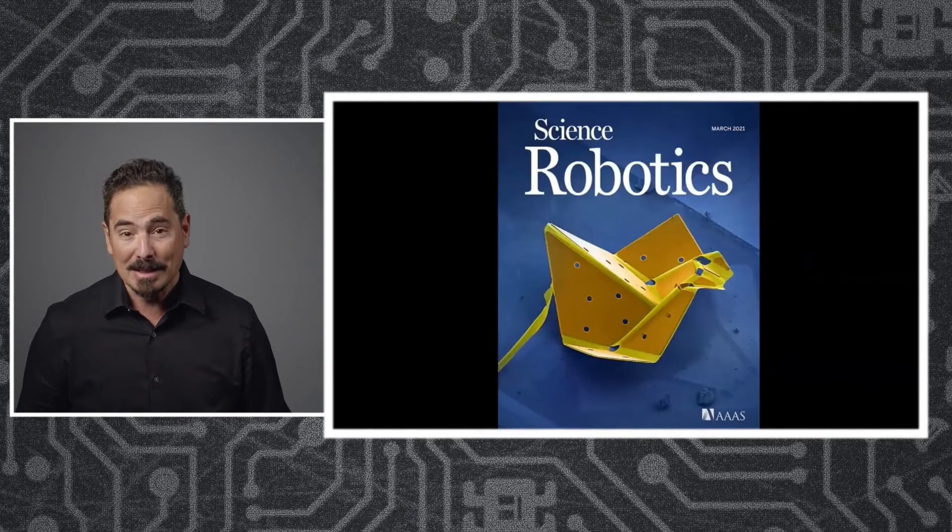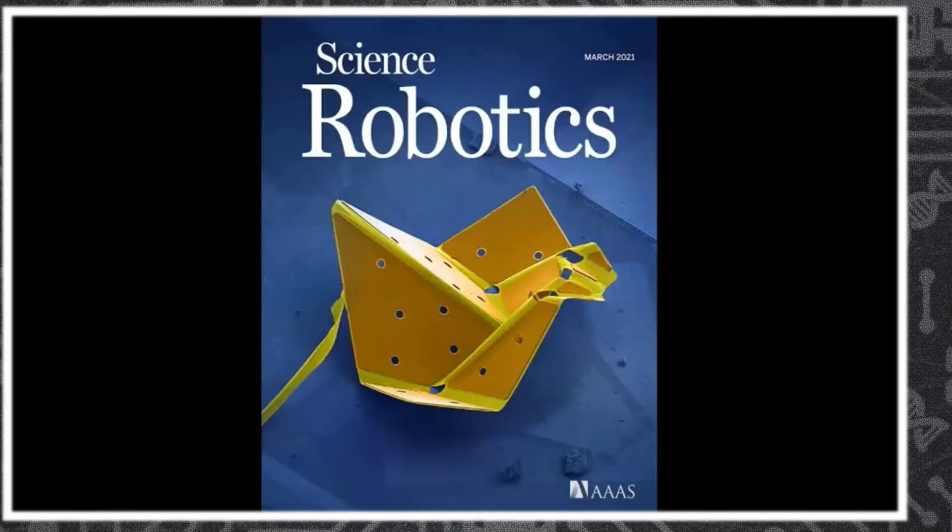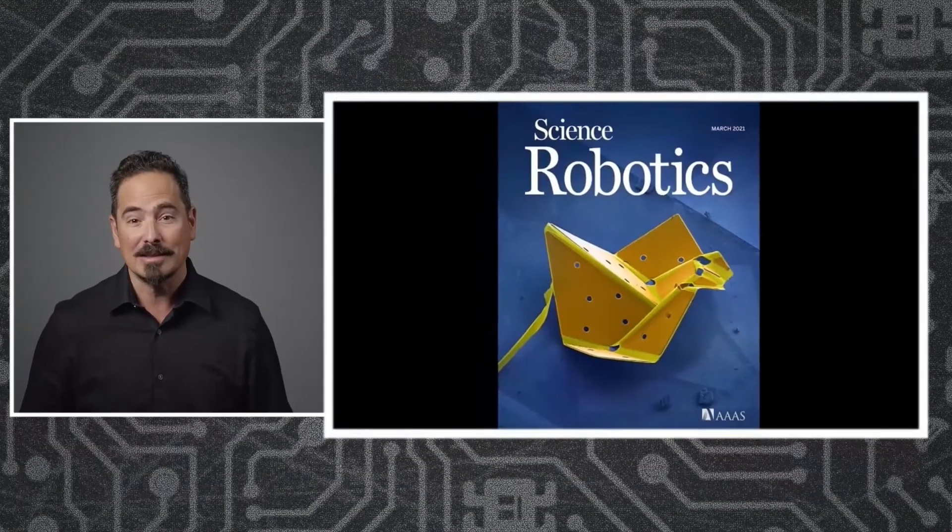This particular design graced the cover of Science Robotics this past March. As amazing as it is, there's still a little defect, which is that stupid wire that's hanging out from the bird on the left side. And one of the things that you can do in order to avoid those wires is put the power source on the device itself.